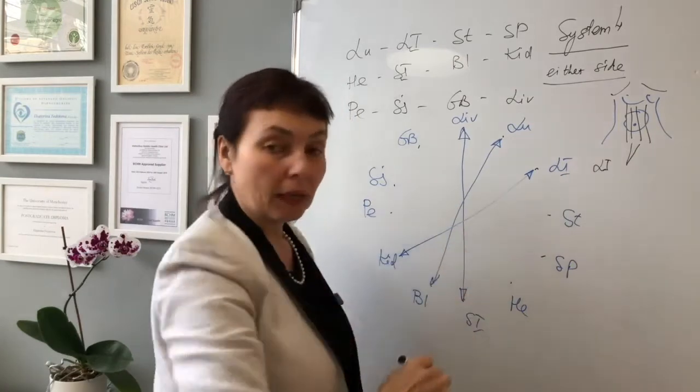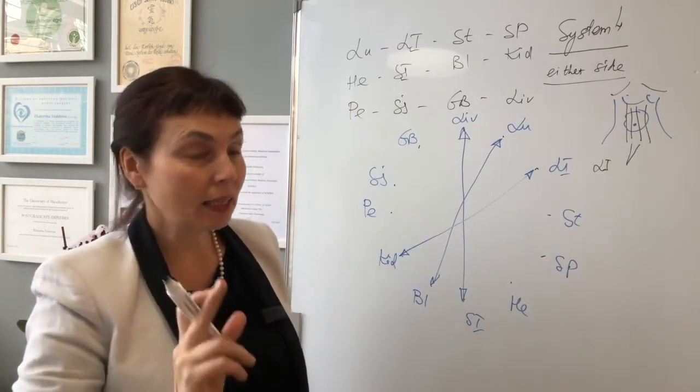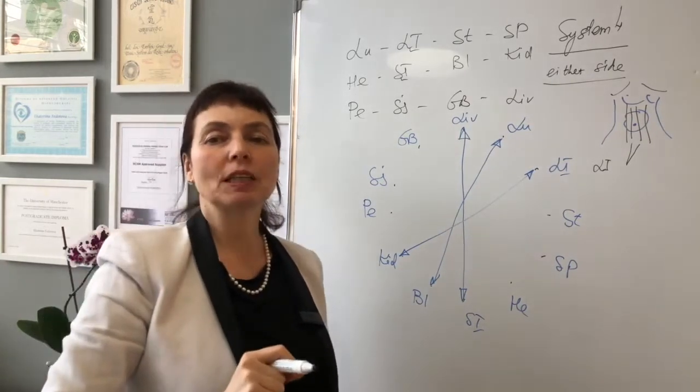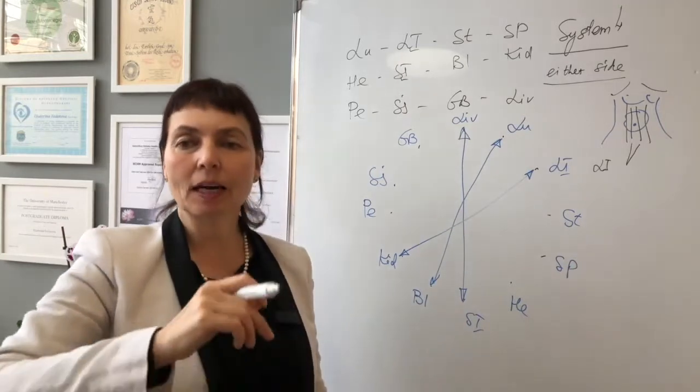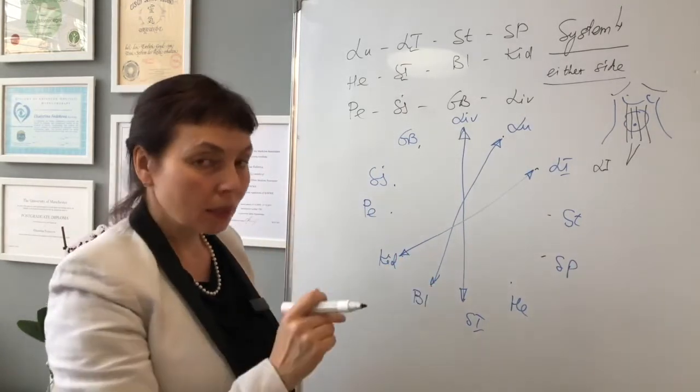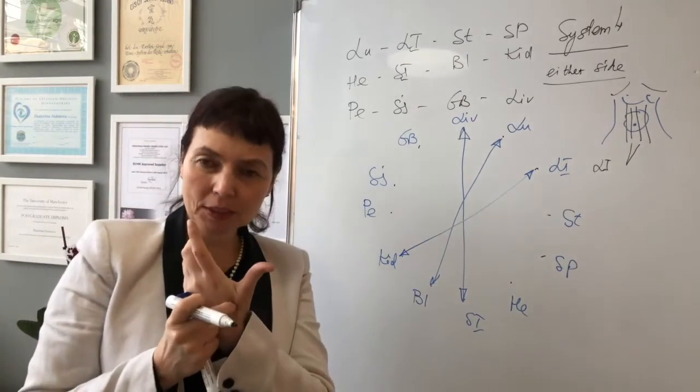Menstrual pain can be balanced by needling large intestine meridian. What is the best point on large intestine meridian for any gynecological disorders? Lingo, situated in the very corner between metacarpals.